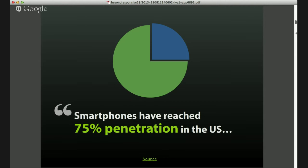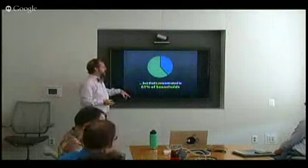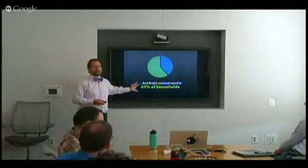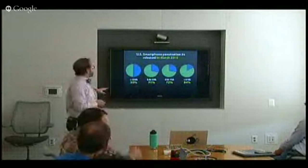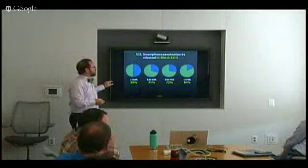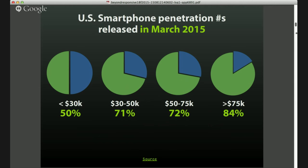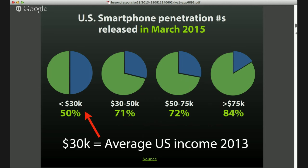Stats say smartphones have reached 75% penetration in the US, but that's concentrated in about 61% of households. Breaking it down by income bracket from Pew Research in March 2015: there was only 50% smartphone penetration in the under-$30K census tract, rising gradually through the $30K–$75K range, with much higher penetration in the $75K-and-over bracket.